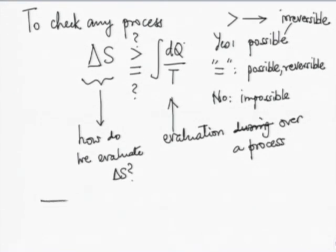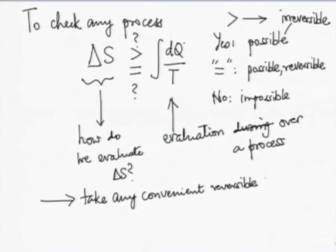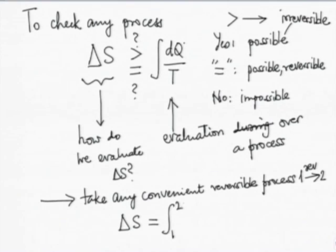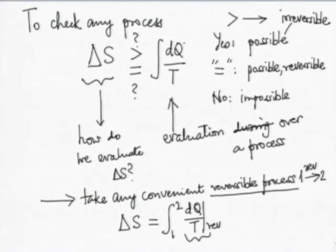The answer is simple: take any convenient reversible process from state 1 to state 2. Then ΔS = ∫₁² dq/T for that reversible process. Evaluate this by determining dq and T along the path. But then, how do you imagine a reversible process? Remember that a reversible process is only to be imagined.